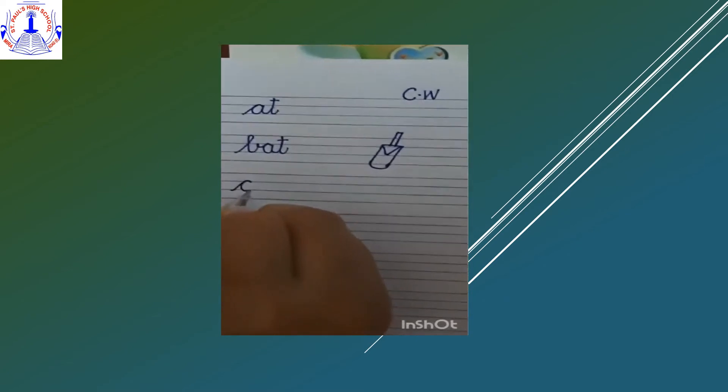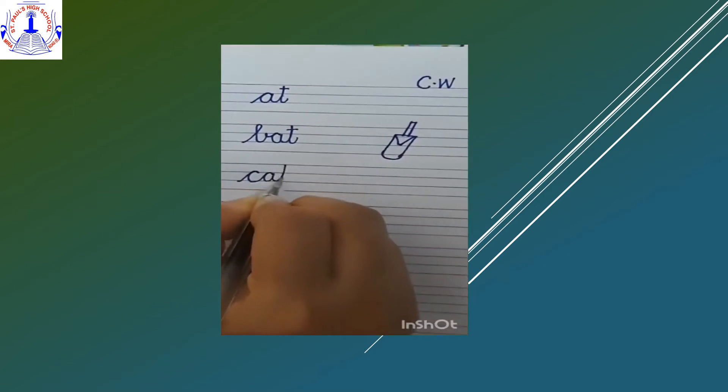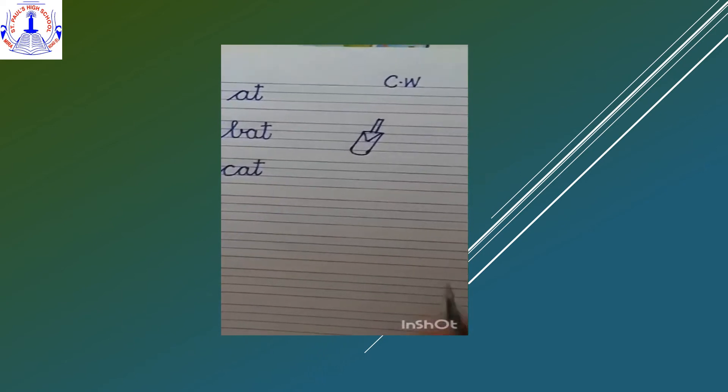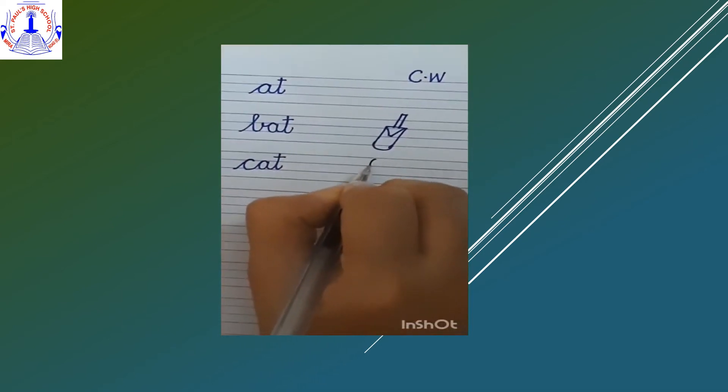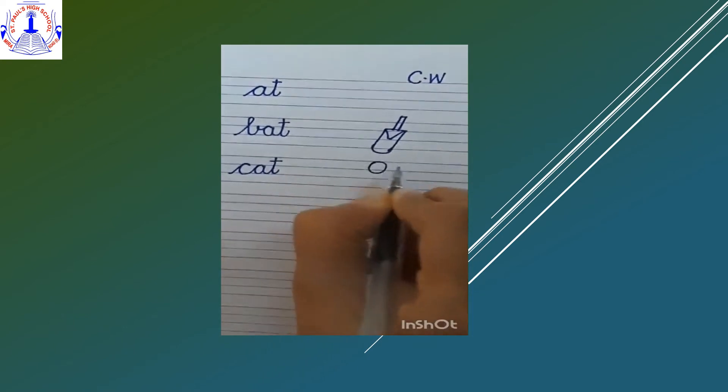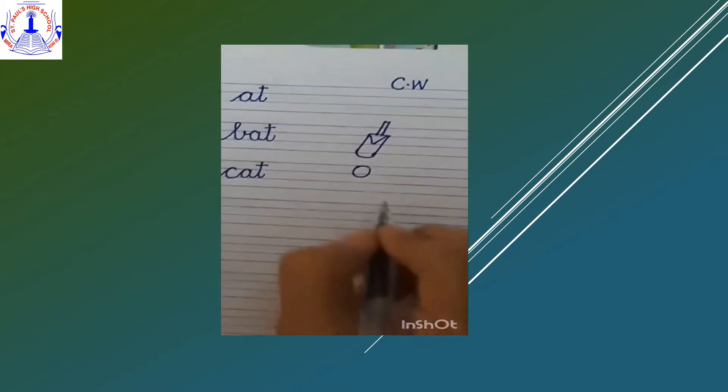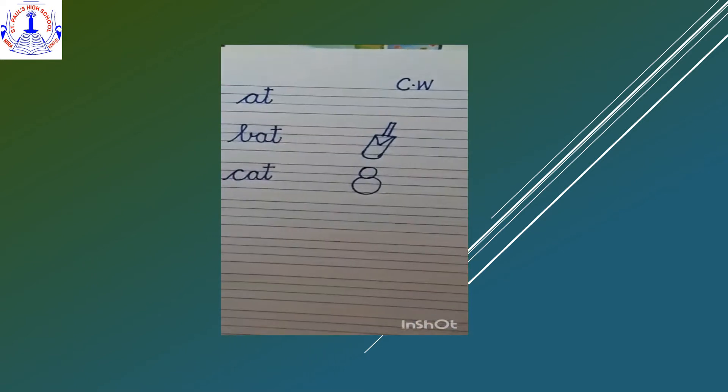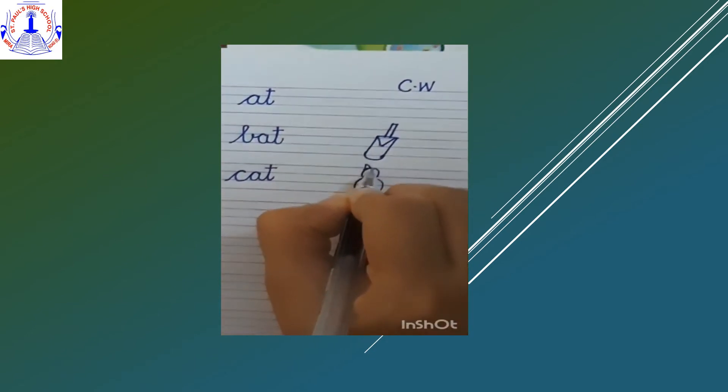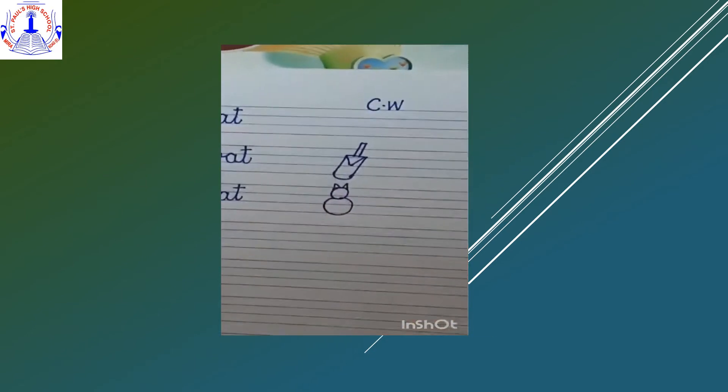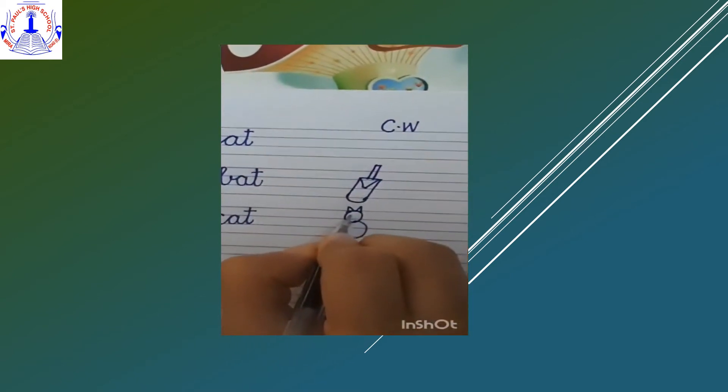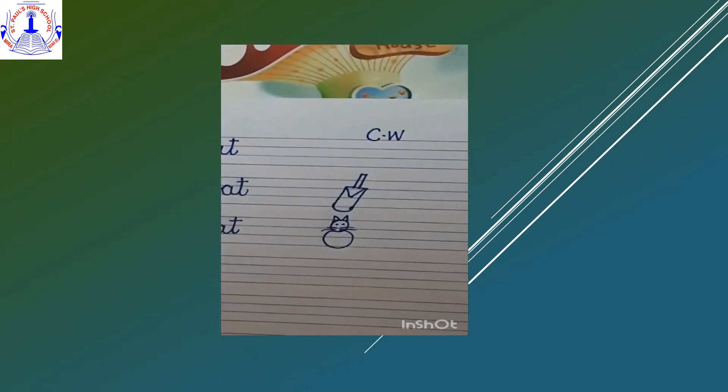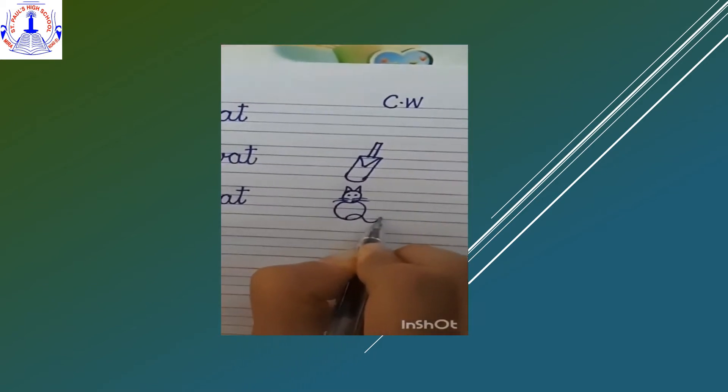Next word is small cursive C joining with A joining with T. C-A-T, cat. Now draw the cat with whiskers and tail.